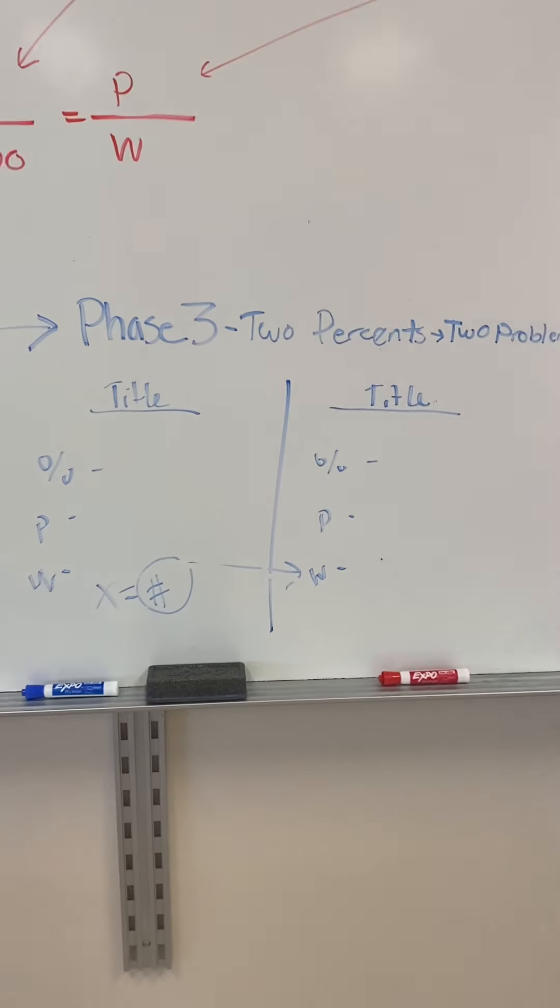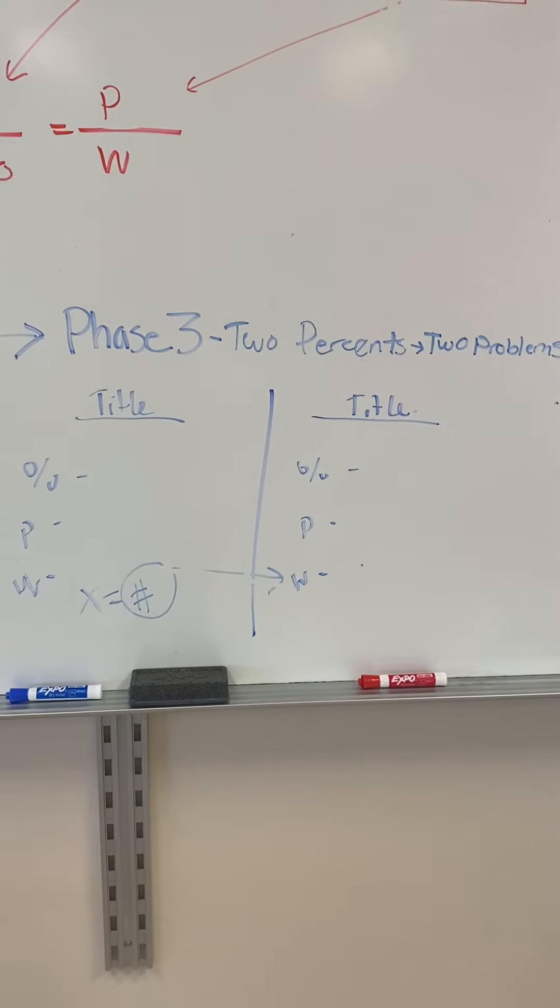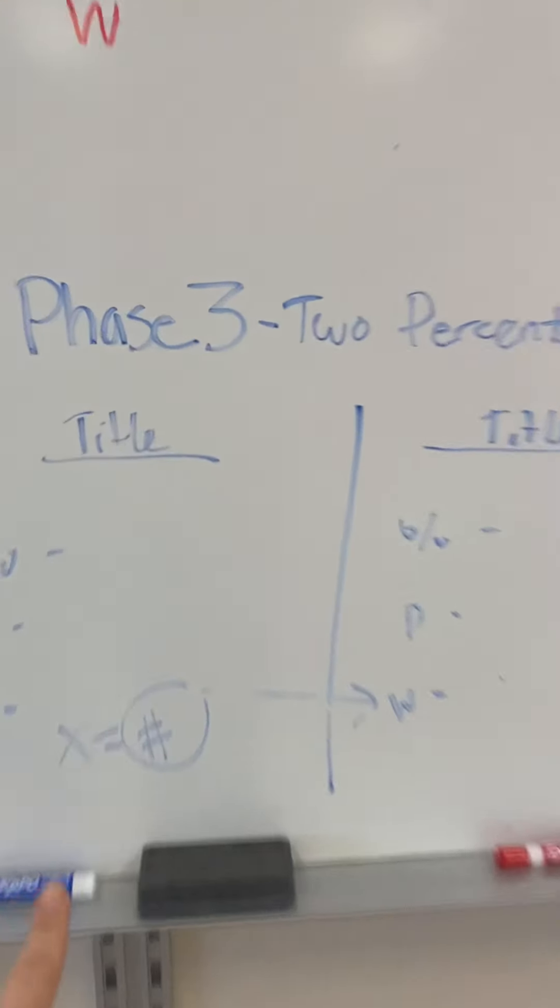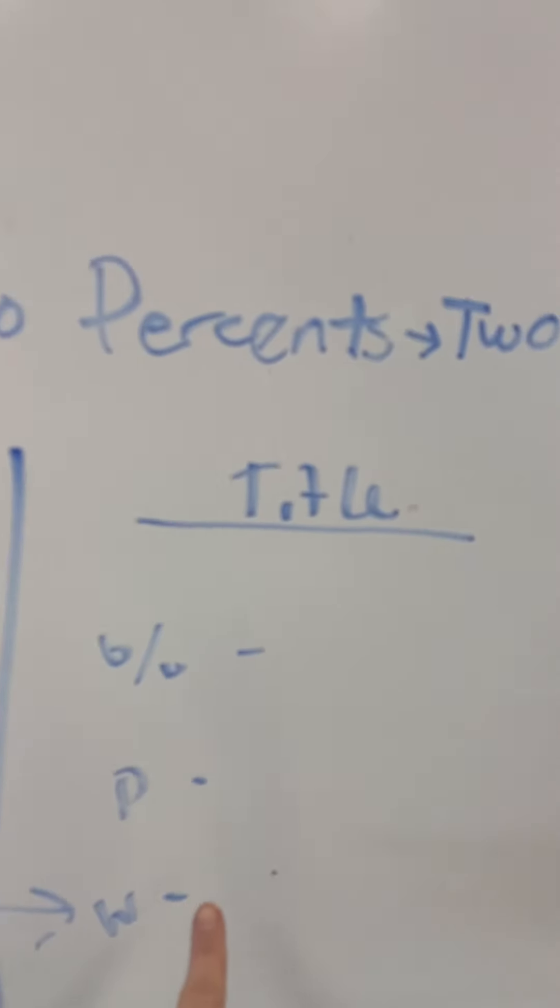In phase three, this is what we wrote on our yellow sheet today: whatever you find for part one becomes your whole for the next question. So we're talking about that right now. So grab your blue packets, the ones that look like this.